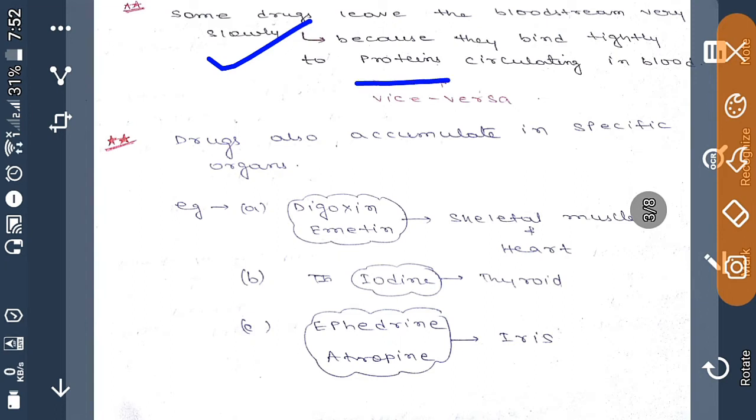If drug is binding tightly to some proteins or circulating proteins which are circulating in the body such as albumin, then that drug will leave the bloodstream very slowly.